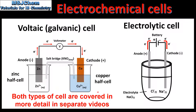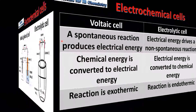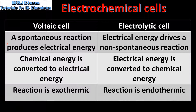Next we'll look at the differences and similarities between these two types of electrochemical cells. In a voltaic cell a spontaneous reaction produces electrical energy, whereas in an electrolytic cell electrical energy drives a non-spontaneous reaction. In a voltaic cell chemical energy is converted to electrical energy, and in an electrolytic cell electrical energy is converted to chemical energy.